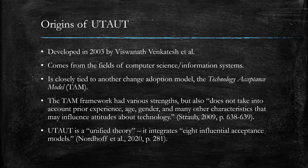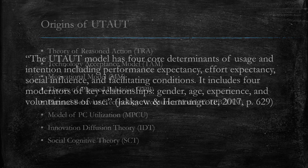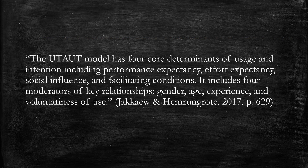UTAUT is a unified theory — it incorporates eight influential acceptance models. Venkatesh and co-authors incorporated the following eight models: Theory of Reasoned Action, TAM, the Motivational Model, the Theory of Planned Behavior, the Planned Behavior/Technology Acceptance Model, the Model of PC Utilization, Innovation Diffusion Theory, and Social Cognitive Theory. Now let's get into the specifics — the actual nuts and bolts of the model.